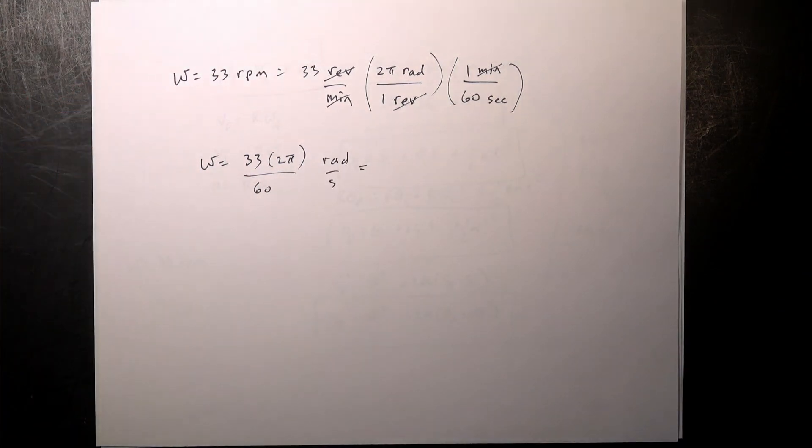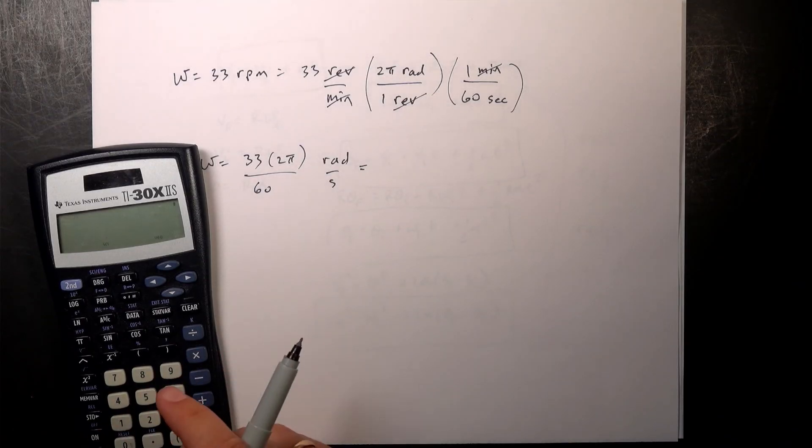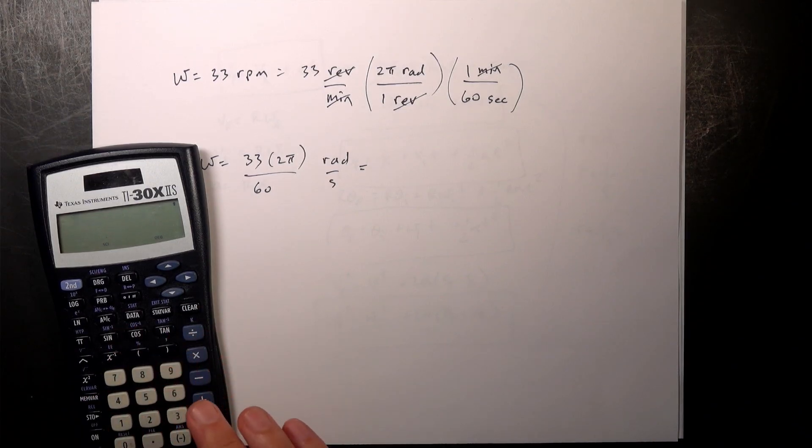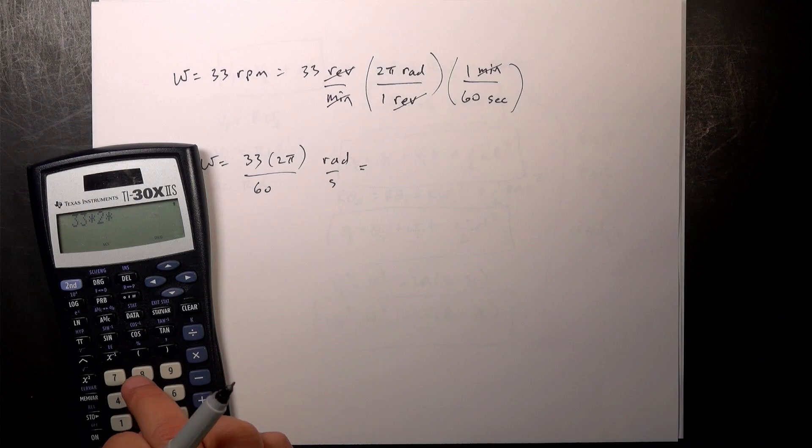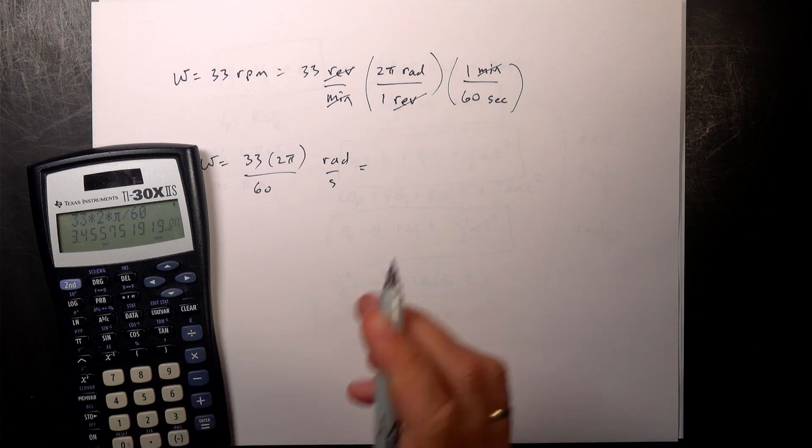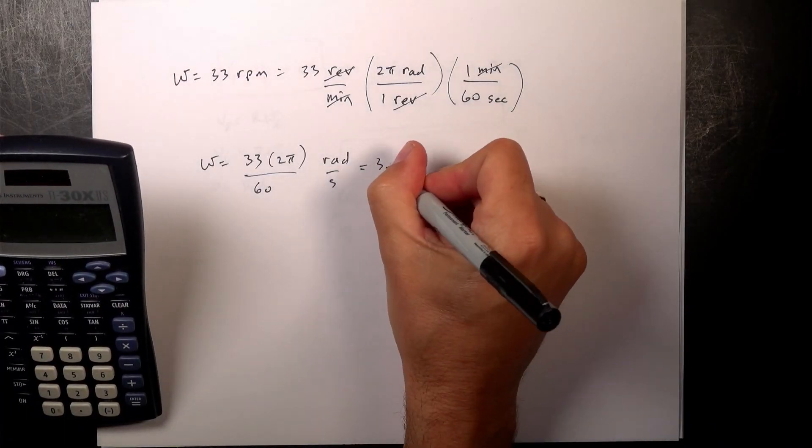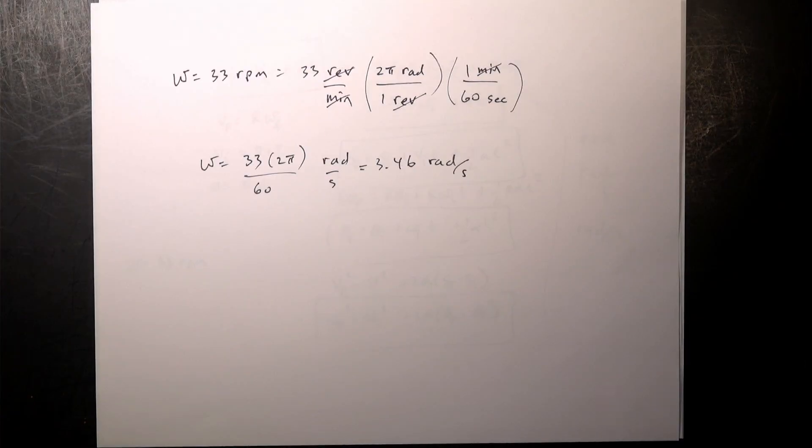And let's get that as a number. Sorry, I left my calculator over there. Okay. So, I am not sponsored by Texas Instruments. I'm just using this calculator because I found it. I don't really like calculators. 33 times 2 times pi. I can never find pi. There it is. Pi divided by 60. And I get, I can't see that, 3.46 radians per second. Okay. There you go. Hope that helps.